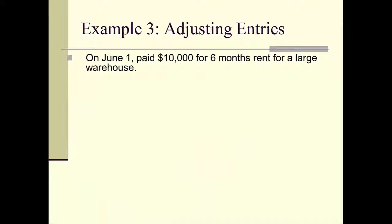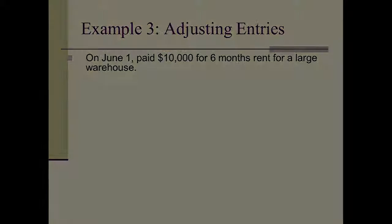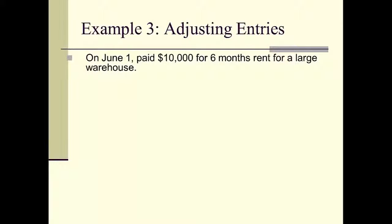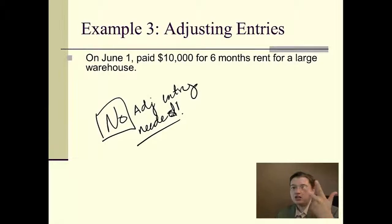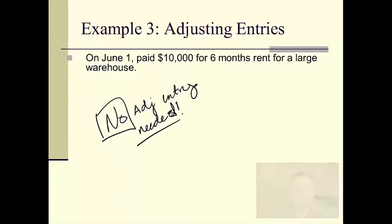Let's look at another example. On June 1st we paid $10,000 for six months' rent for a large warehouse. Do we need an adjusting entry on December 31st? If I paid six months' rent on June 1st — June, July, August, September, October, November — by the time I get to year end on December 31st, this is all done. I've used all of the rent. I would have just put it in rent expense at the beginning, since I knew by year end it would all be used up. So in this case, no journal entry is needed at all.